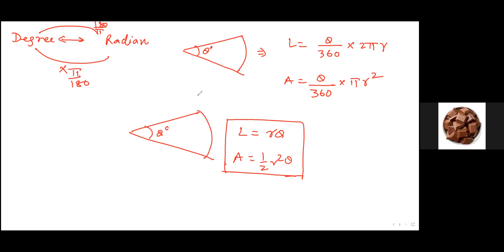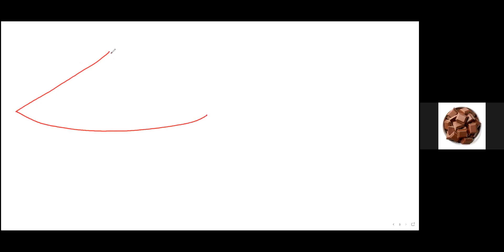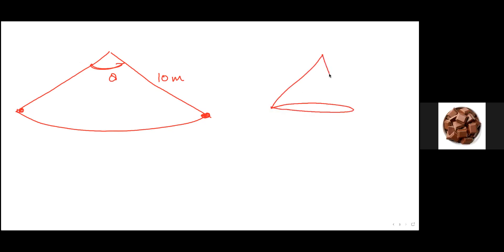Let me take an example to help understand these fundamentals. Consider a sector with a particular angle theta where this length is 10 meters, and the two ends of the sector are joined to form a cone. This cone has a radius of 5 centimeters. What you have to find out is what was the angle theta.